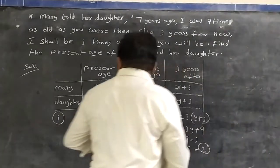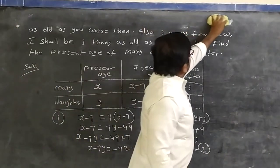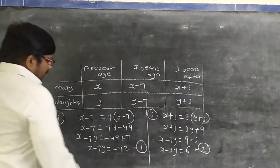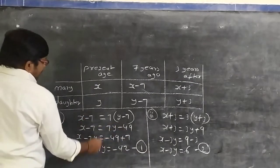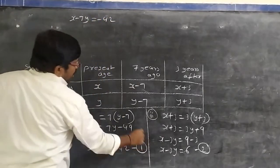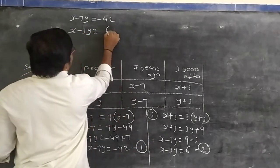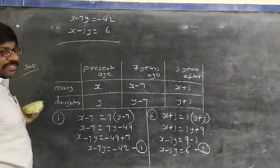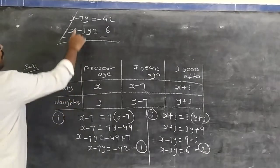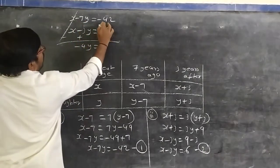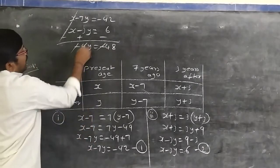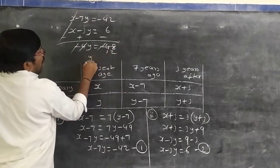Solving by elimination: equation 1 is x − 7y = −42 and equation 2 is x − 3y = 6. Subtracting equation 2 from equation 1: the x terms cancel. −7y + 3y = −42 − 6, so −4y = −48, giving y = 12. Wait — recalculating: −4y = −48, so y = 12. However the teacher states y = 21.